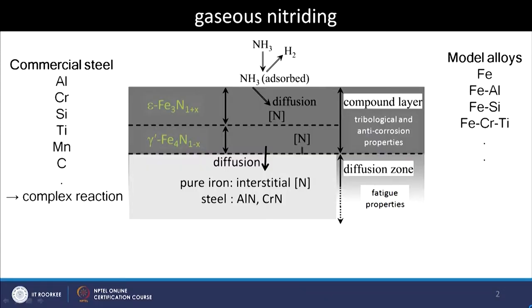Greetings to everyone. Today we will continue discussing gaseous nitriding. In the last lecture we came to understand why it is possible to perform gaseous nitriding using an ammonia-hydrogen mixture rather than pure N2, and we also looked at the schematic microstructure showing how the microstructure evolves as the nitriding process continues.